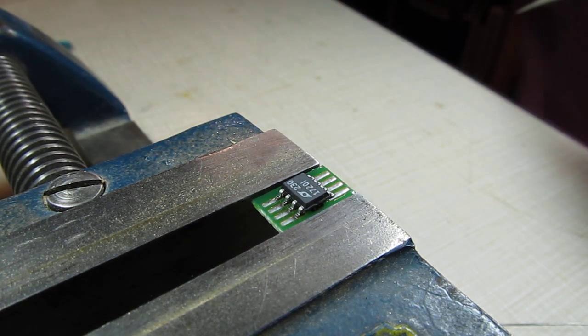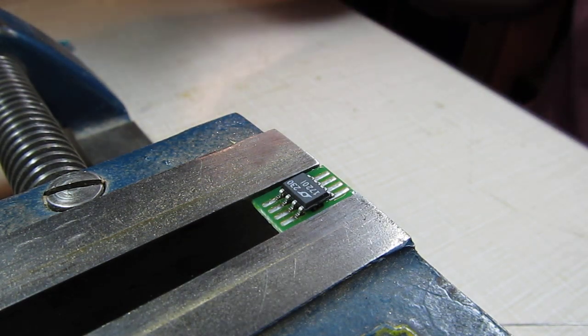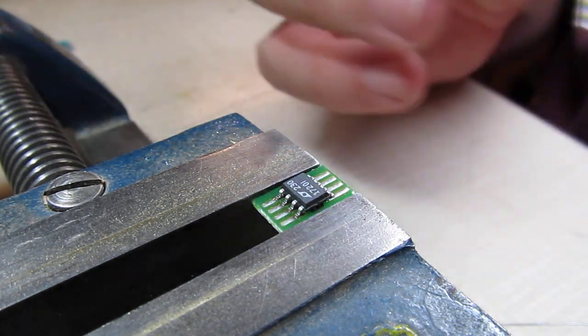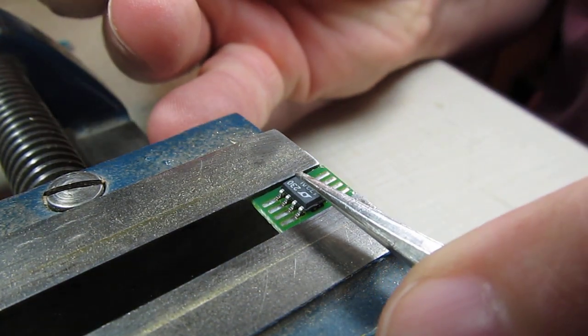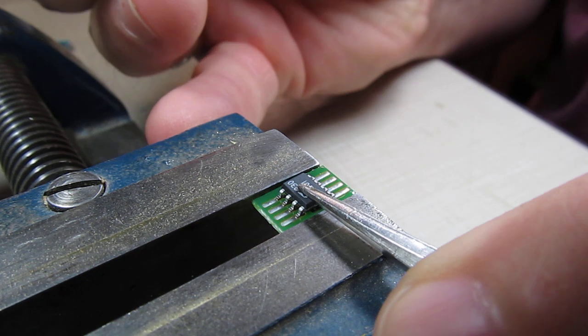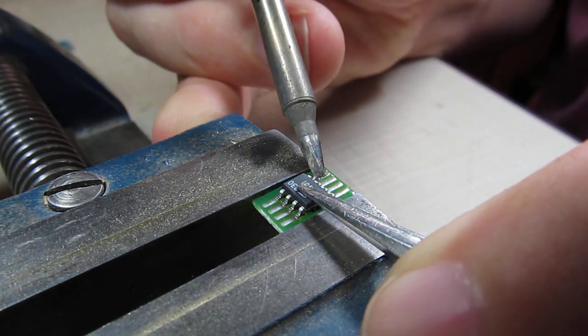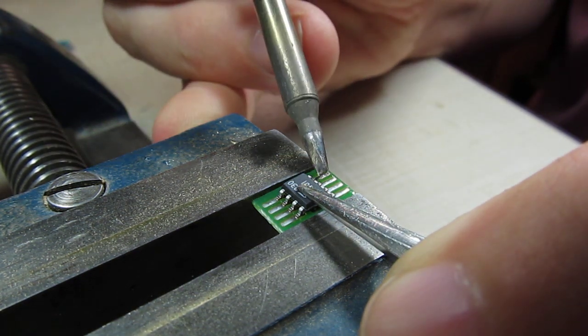Usually there's enough solder on the leads themselves and on the board to make that first initial tack. What I normally do is hold down the part to keep it still and tack a corner in place. Just touch the soldering iron to it.